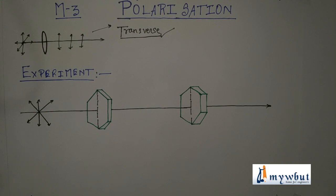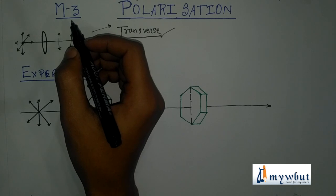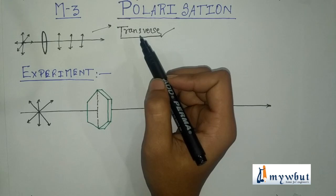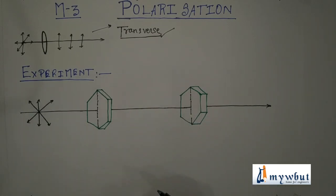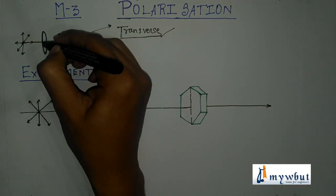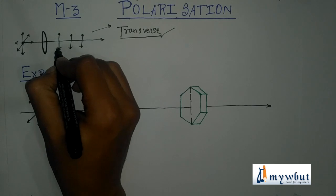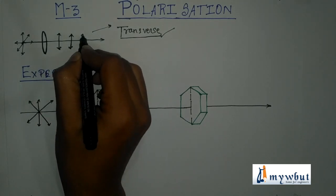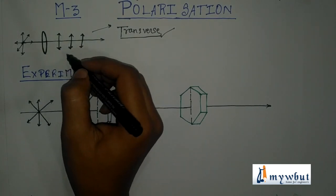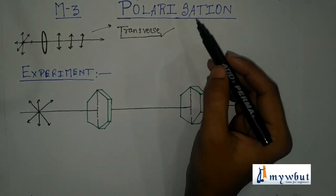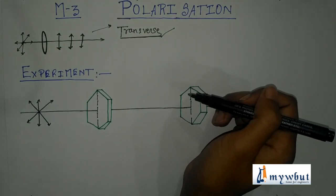Welcome to Module 3, which has three parts: polarization, laser, and holography. Let us start with polarization. The basic definition of polarization is: if light passes through an element and after passing through it the light rays vibrate in only one direction — that is, they become unidirectional — then we say that the phenomenon of polarization has occurred. The phenomenon of polarization helps in determining the transverse nature of light.